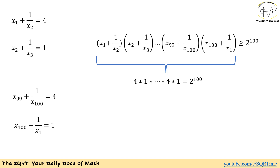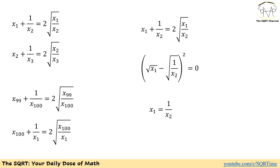Remember, based on AM-GM inequality the equality condition happens when the two variables are equal. To prove this, we solve: x1 plus 1 over x2 equals 2 times the square root of x1 over x2, which we can rewrite as the square of the square root of x1 minus the square root of 1 over x2 equals zero. So x1 and 1 over x2 must be equal.